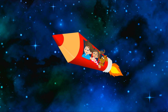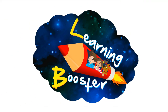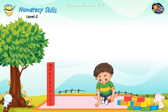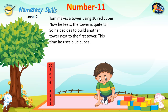Welcome to Learning Booster, your digital learning companion. Number 11: Tom makes a tower using 10 red cubes. He feels the tower is quite tall, so he decides to build another tower next to the first one, this time using blue cubes. Tom has 10 cubes and places one more to make 11 cubes.